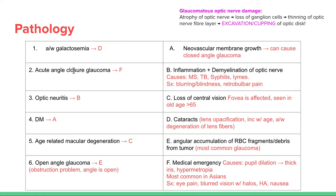Acute angle closure glaucoma involves an angle closure problem. Things that close the angle include pupil dilation and a thick iris from hypermetropia. It is most commonly seen in Asians. Symptoms are eye pain, blurred vision with halos, headache, and nausea. Compare this to number six — open angle glaucoma — where the angle is open but something is obstructing it, such as RBC accumulation or debris from a tumor in the angle. Open angle glaucoma is the more commonly seen type.